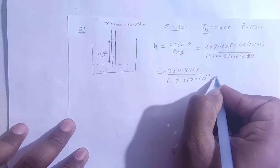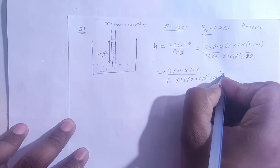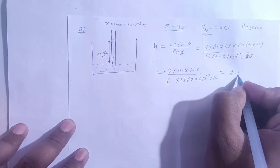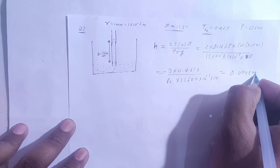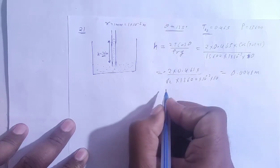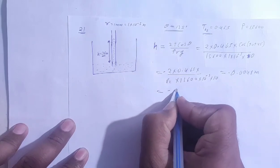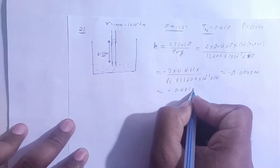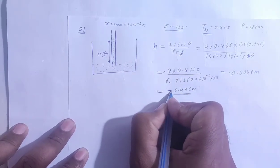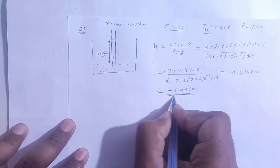Divided by 10 to the power minus 3 into 10. We will solve this, then we have the answer is 0.0048 meter. Then if we see in centimeter, what will come in centimeter is 0.48 centimeter. This will reduce your height, capillary rise will decrease.